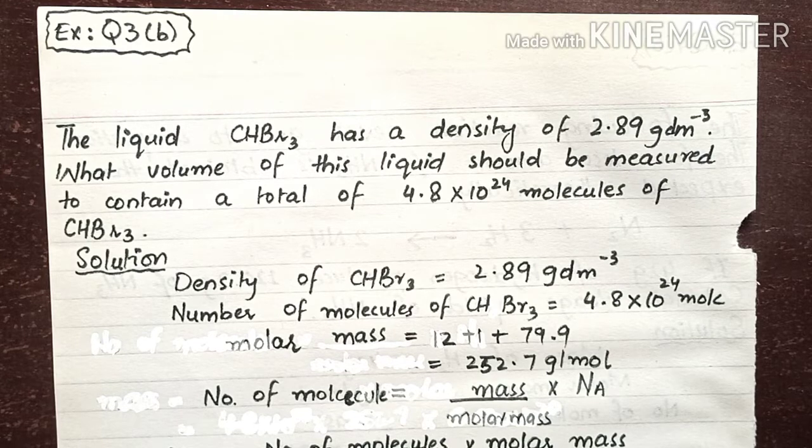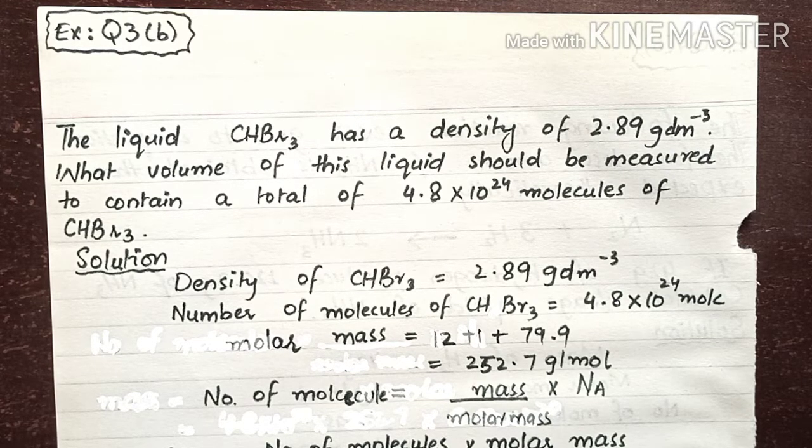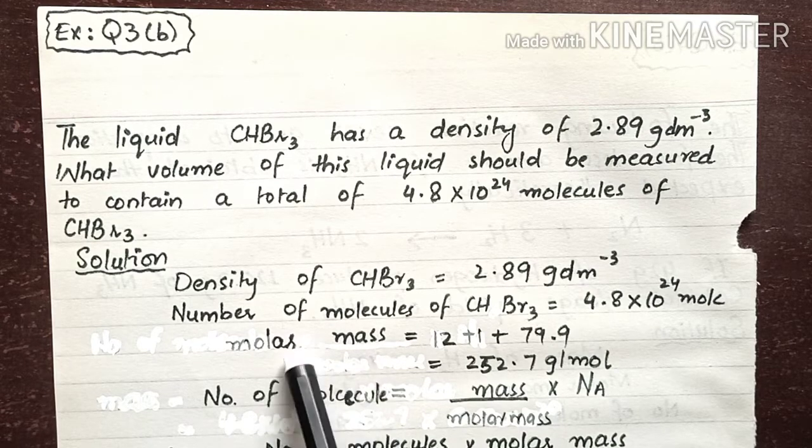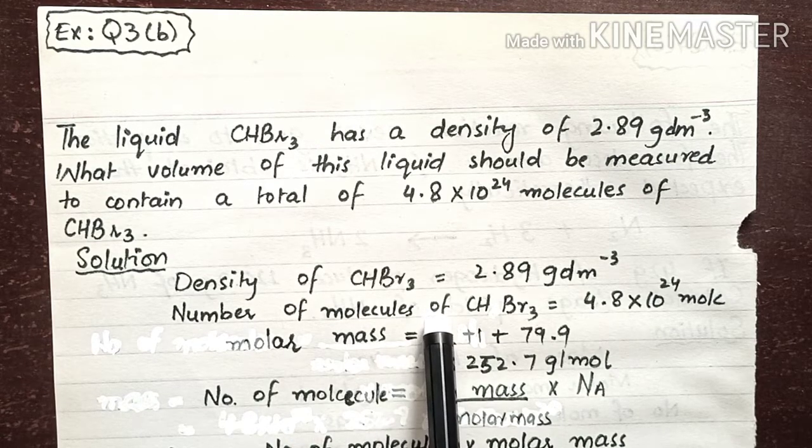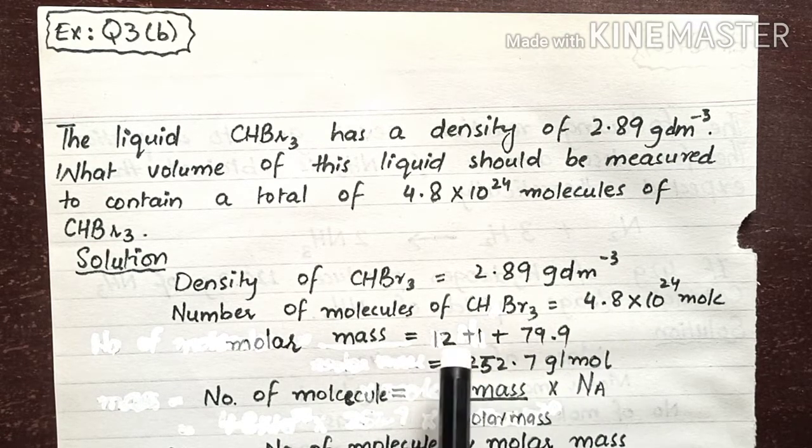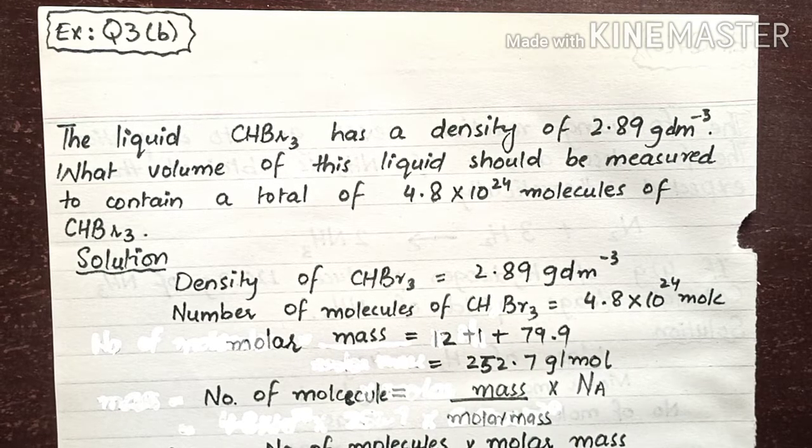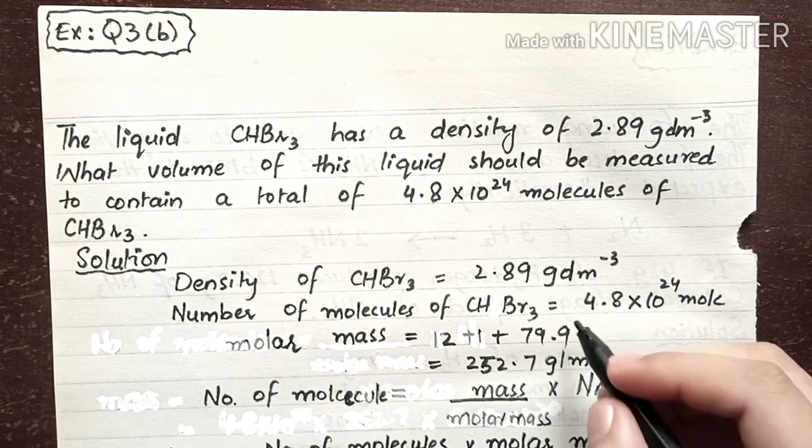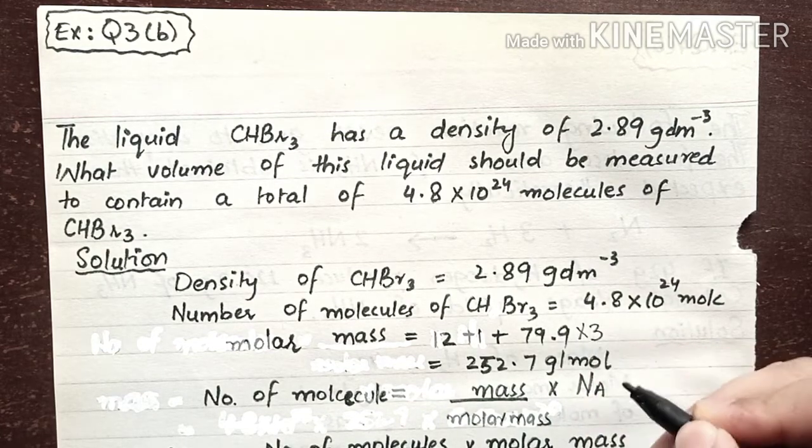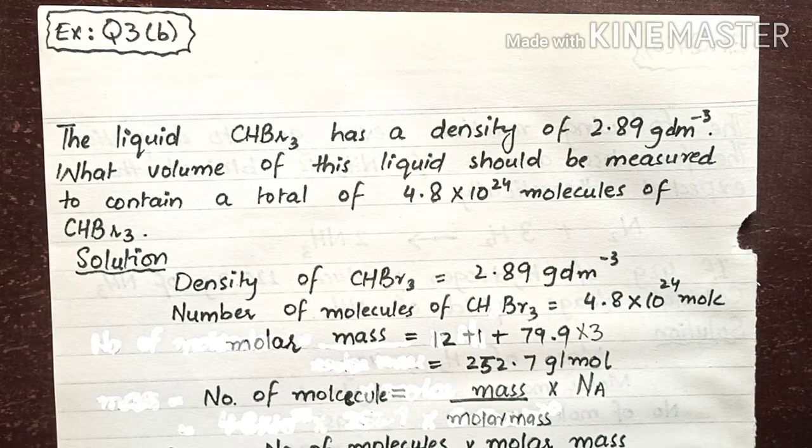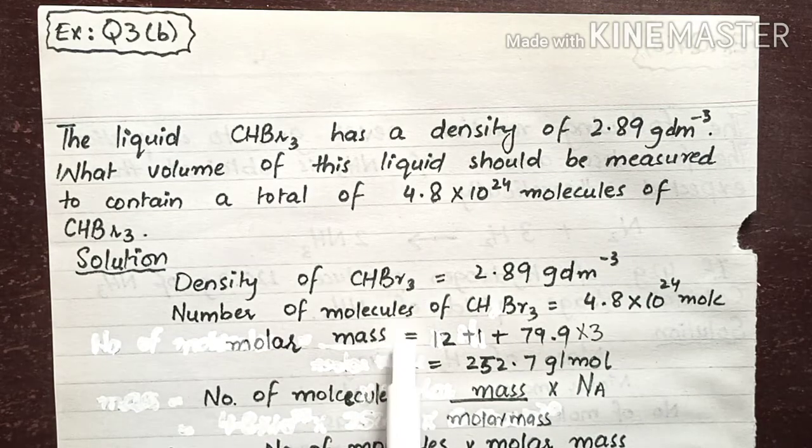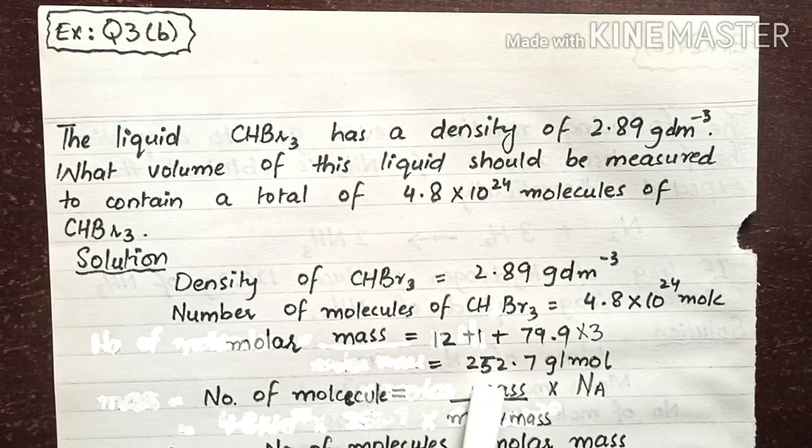For calculating the mass, the first step is calculating the molar mass of CHBr3. The molar mass comes out to be 12 for carbon, 1 for hydrogen, and 79.9 for one bromine molecule. We multiply 79.9 by three because we have three bromine molecules: 12 + 1 + (79.9 × 3) = 252.7 grams per mole.